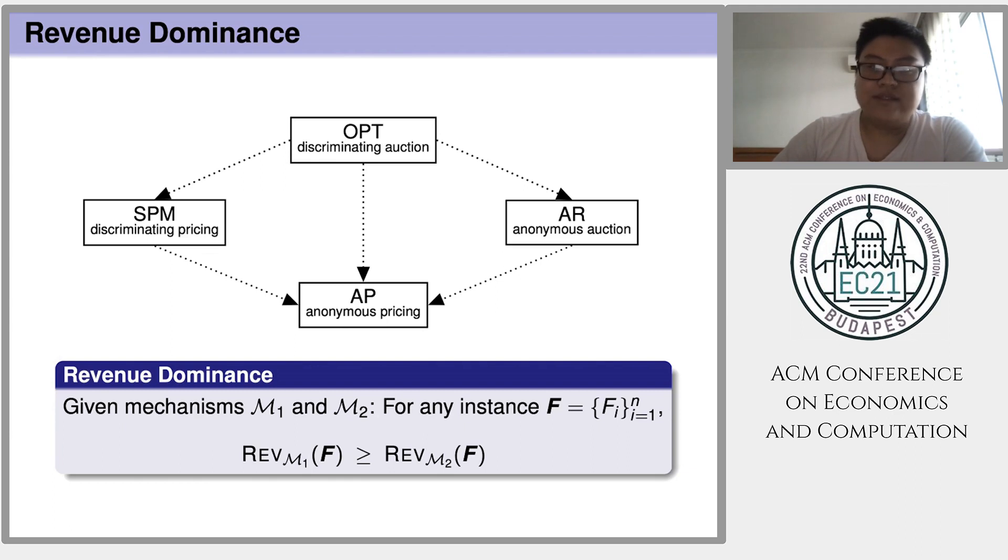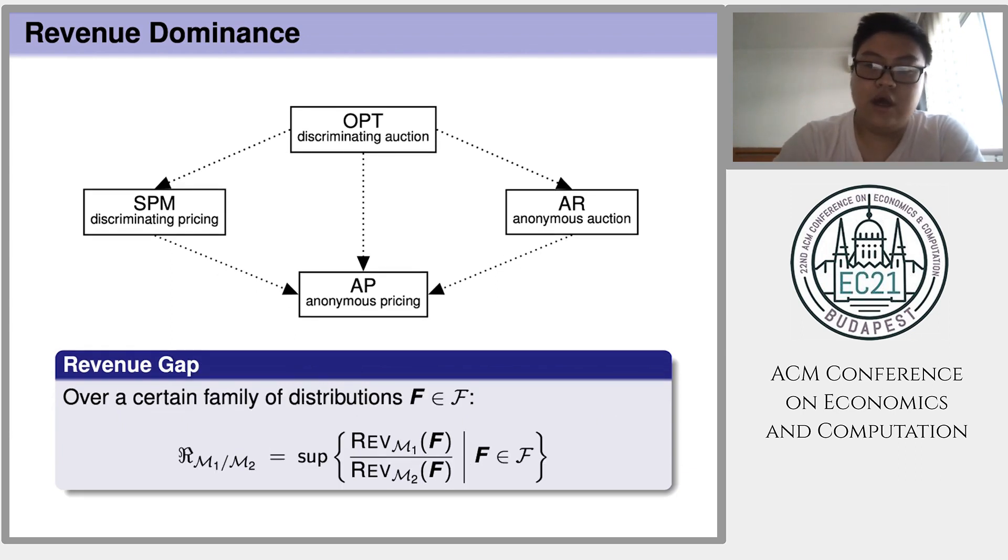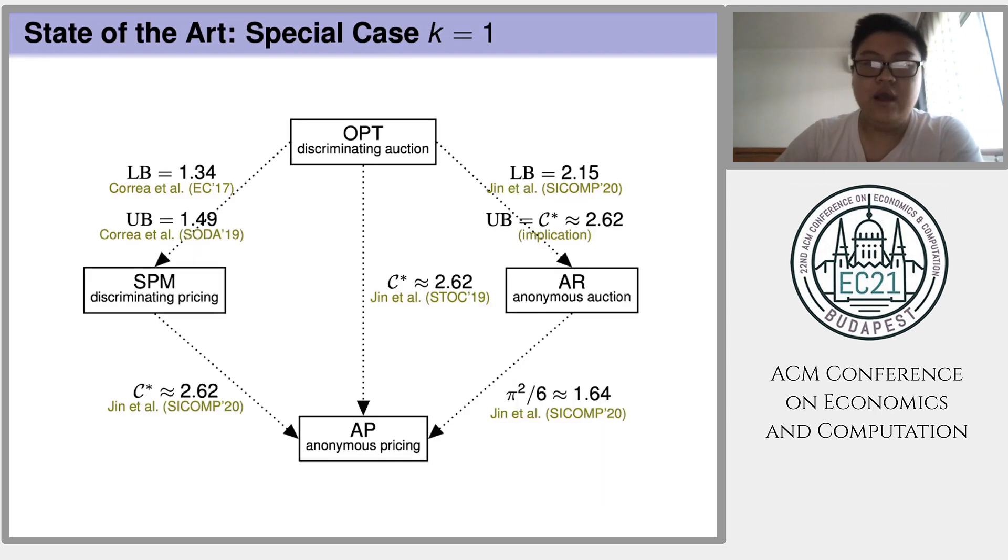So to understand the relative powers of those four mechanisms, a very basic question is how large the revenue gap can be. More specifically, if we consider two mechanisms M1 and M2, where M1 always dominates M2, then we define the revenue gap as the largest possible ratio of the two revenues. The supremum is over a certain family of instances.